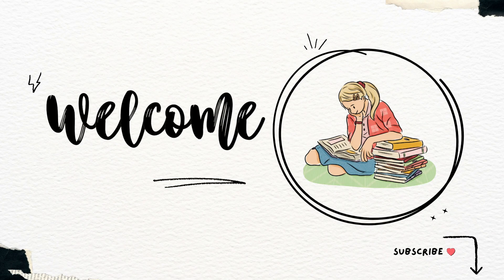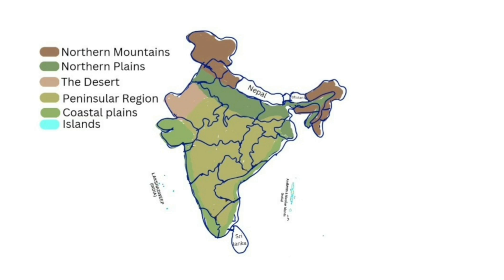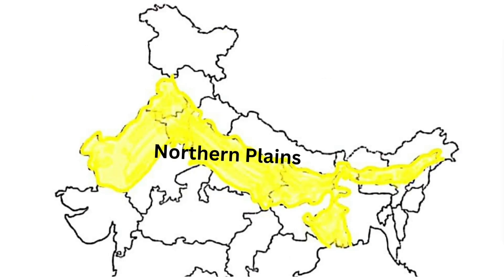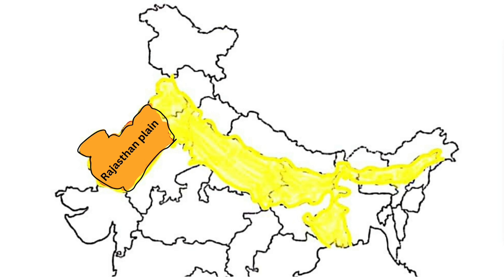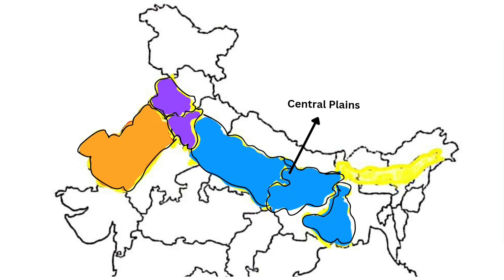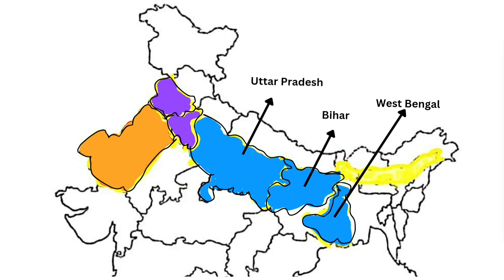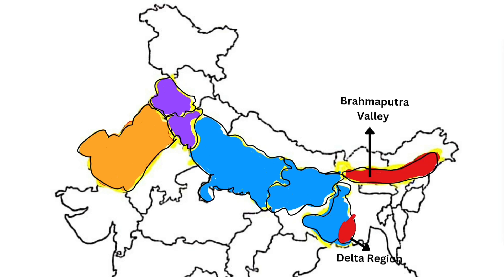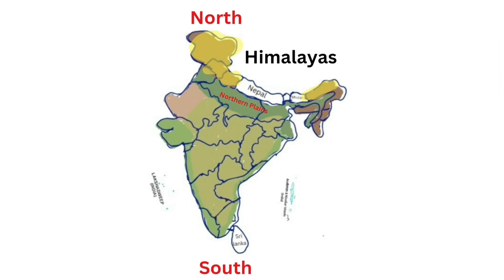Hello friends, welcome back to my channel. In the last video we discussed about the Northern Mountains. Now we are going to discuss about the Northern Plains. Northern Plains are divided into Rajasthan Plains, which is generally studied as a separate physical division of India, western plains covering the states of Punjab and Haryana, and central plains covering the states of Uttar Pradesh and Bihar.